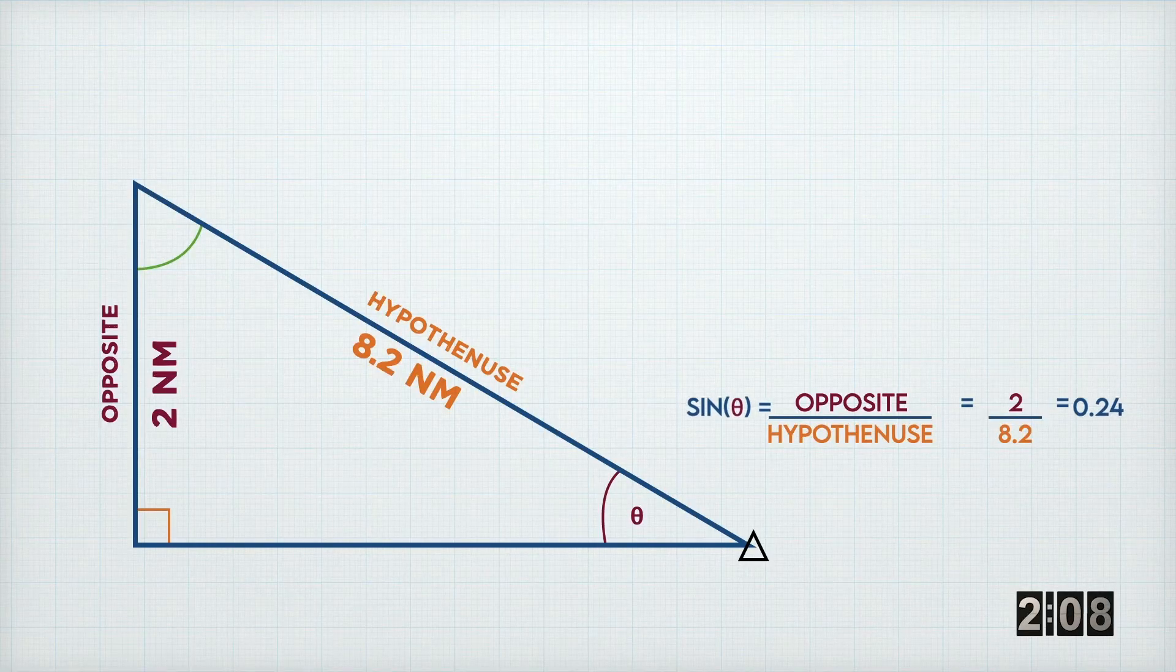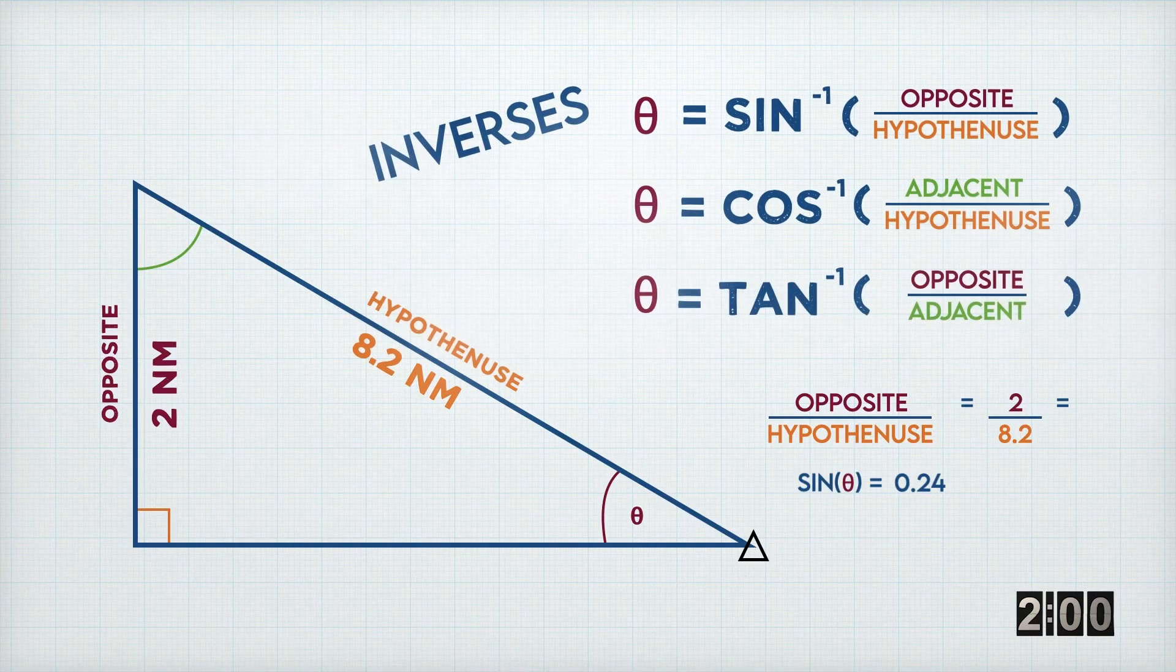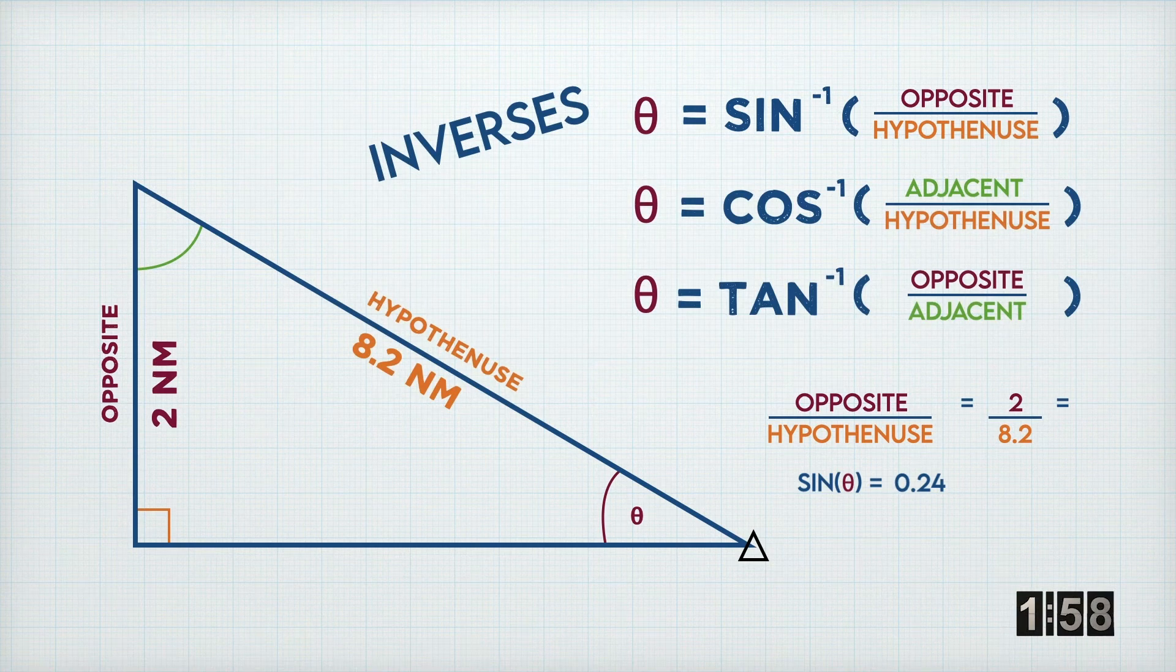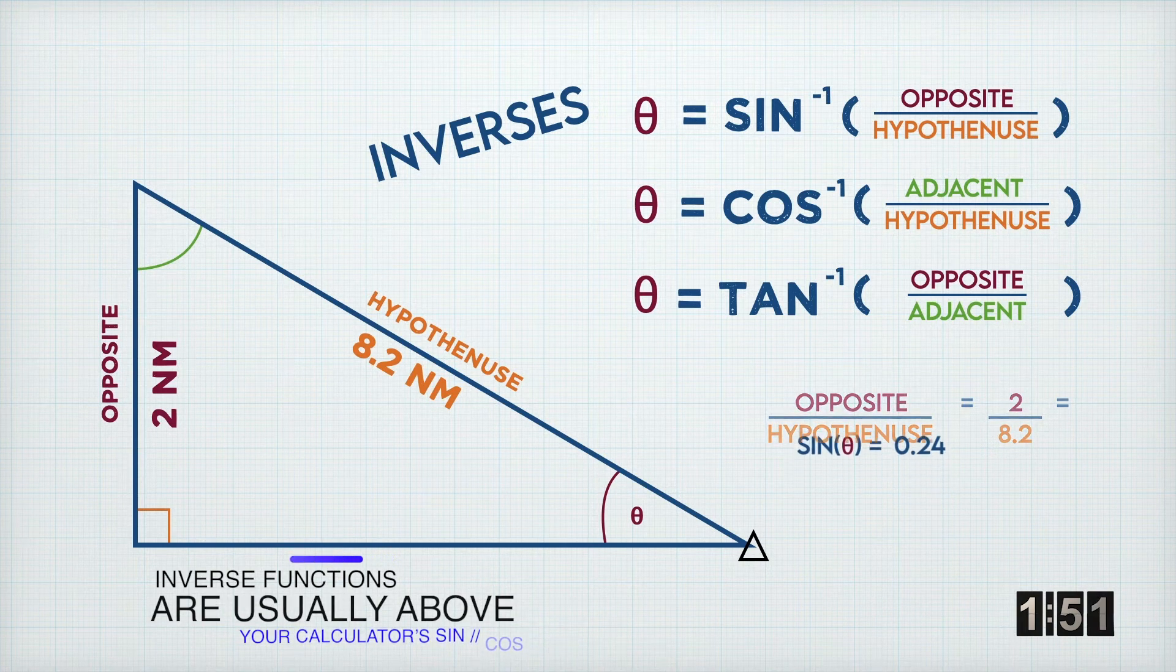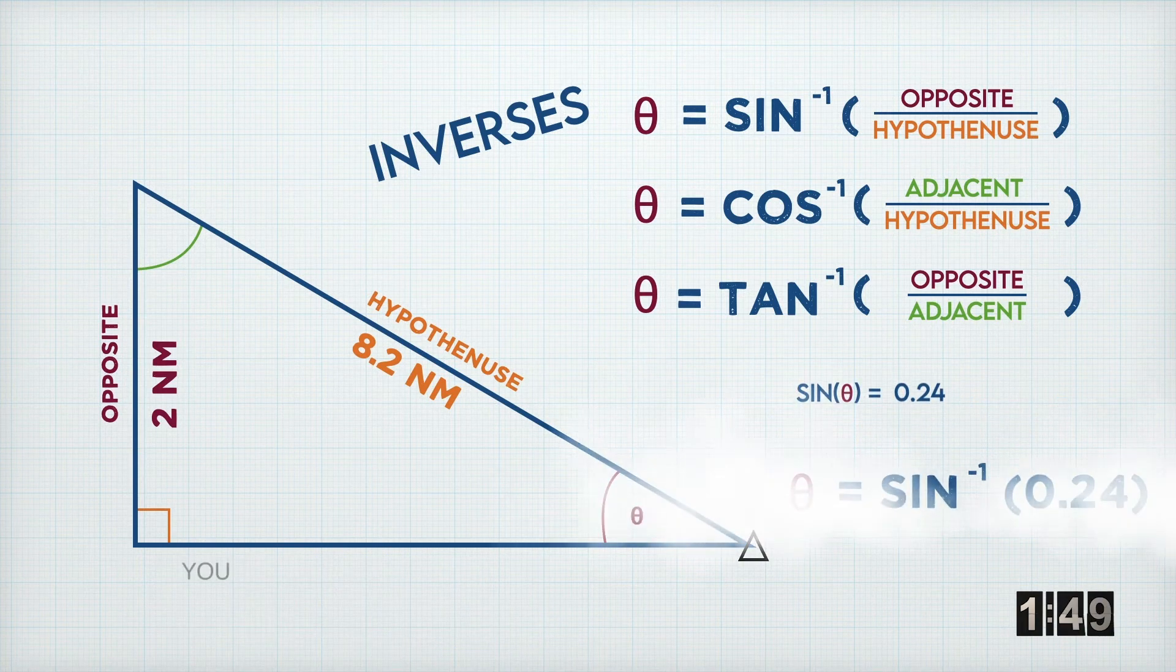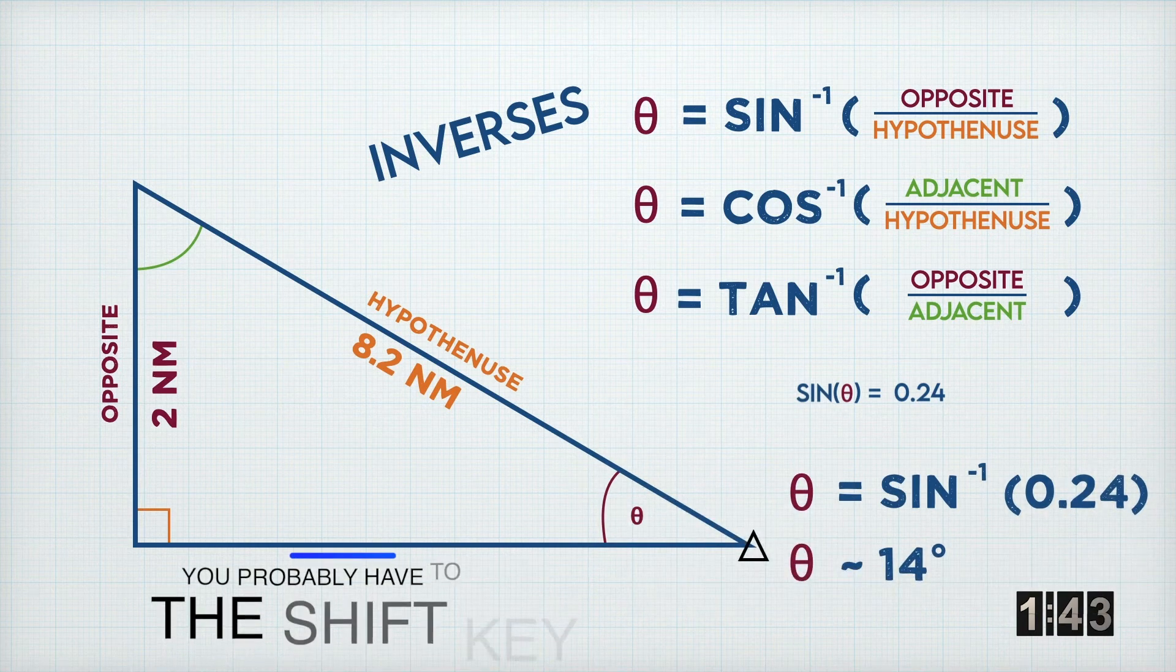But this doesn't give us the size of the angle. Instead, it only gives us the sine of the angle. And so to get out of this pickle, we need something called inverse functions. From the formulas on the screen, you can see that if we don't know the angle, we can do the inverse sine of the opposite over hypotenuse, which in this case we've worked out to be 0.24. So doing the inverse sine of 0.24 gives you about 14 degrees.